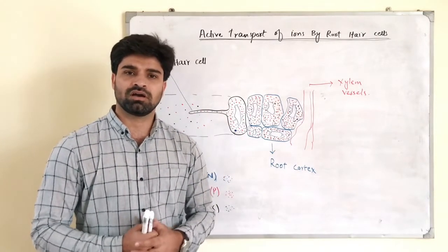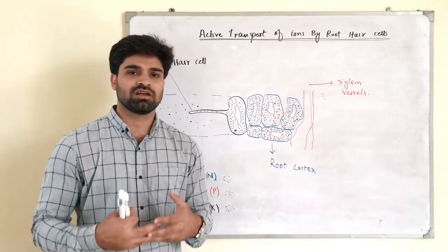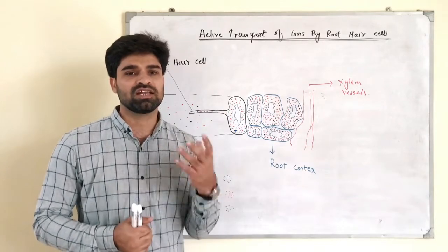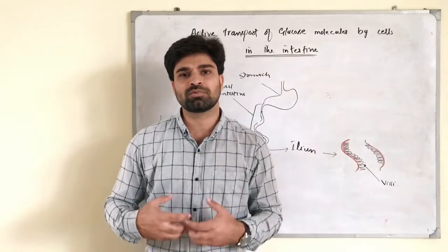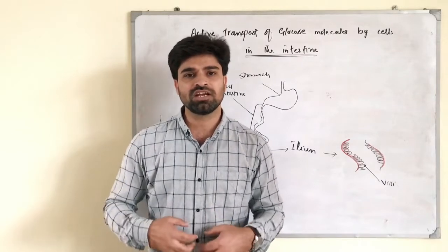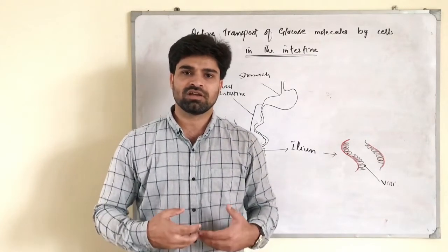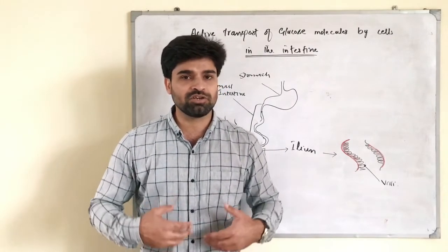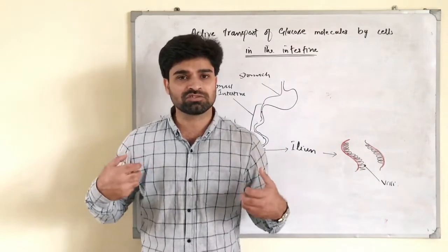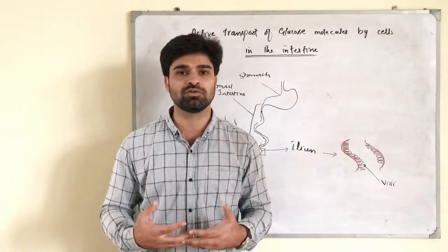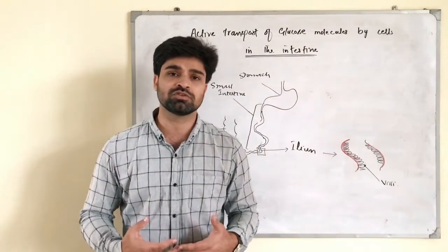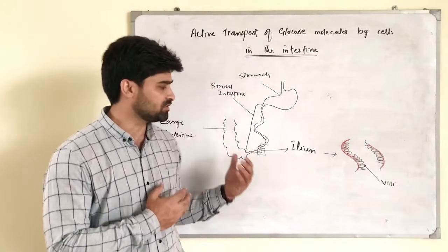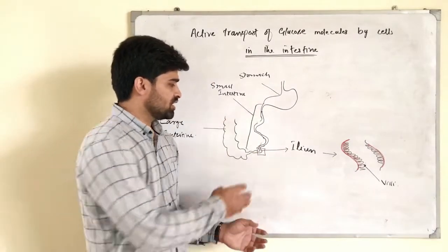In the case of human beings, glucose is transported actively from the small intestine — the ileum — to other parts of the body. Glucose, which is the product of digestion of carbohydrates, has a relatively low concentration in the ileum, while other parts of the body have a relatively higher concentration. This is another example of active transportation.